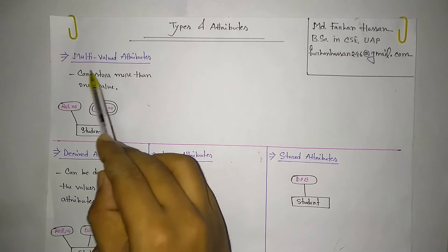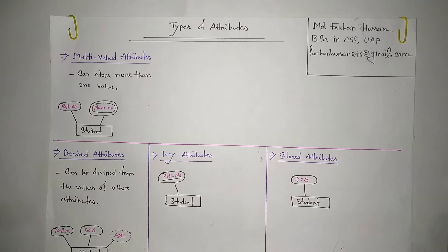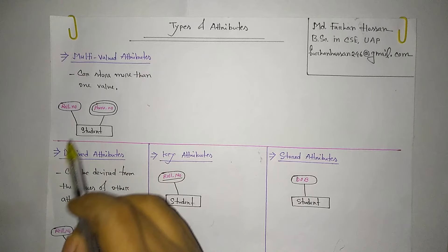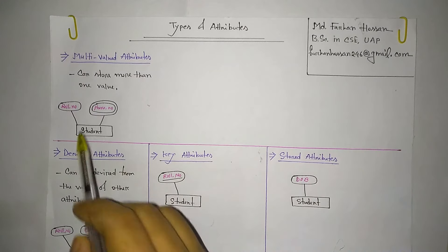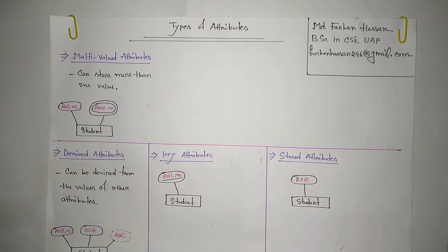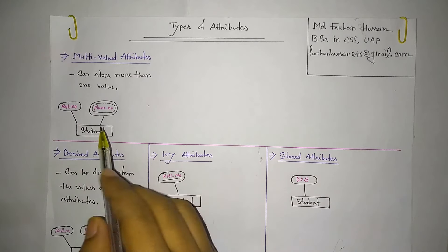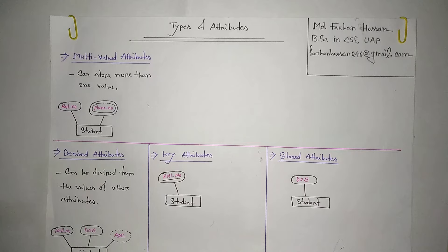Multi-valued attributes. In an ER diagram, multi-valued attributes are represented with a double ellipse symbol. A multi-valued attribute can store more than one value. For example, phone number — a student can have multiple phone numbers. Similarly, email — a student can have multiple email addresses, so email is also a multi-valued attribute.